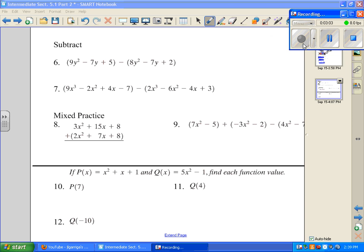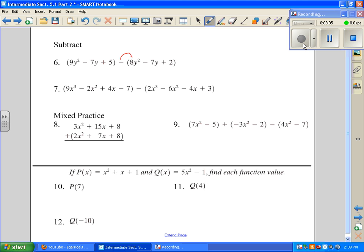Okay, we're going to be subtracting. First thing, we need to distribute this negative, so that becomes a negative 8y squared. And then this becomes a negative times a negative is a positive 7y. And then when I distribute the negative down there, you get a negative 2. And now we want to add down. When you add down, you're going to get y squared. These cancel. Plus 3. So my answer is just y squared plus 3.